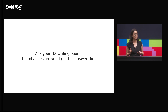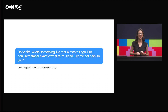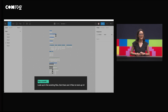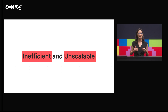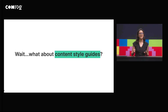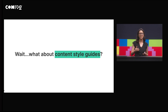Or you could ask your UX writing peers, but chances are you get the answer like, 'Oh yeah, I wrote something like that four months ago, but I don't remember exactly what term I used — let me get back to you.' Then that person disappeared for two hours to maybe two days doing the same thing. This process is totally inefficient and unscalable. What about having content style guides? Well, style guides serve a different purpose — they give you guidelines. But what you actually need here is a library of all the copy you have in one product.